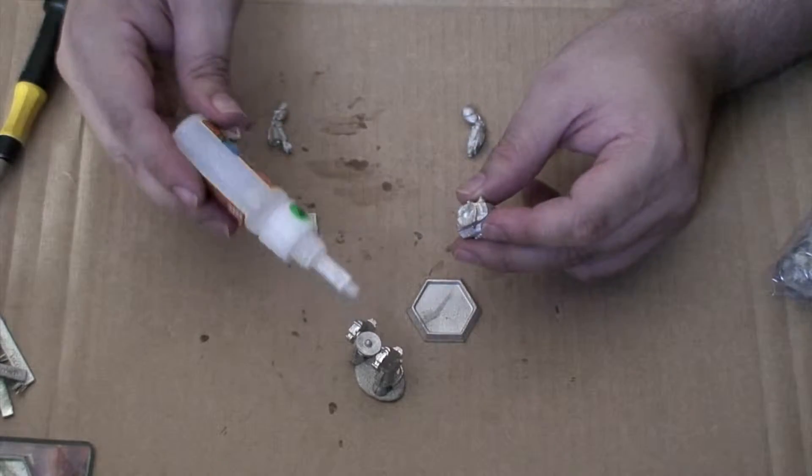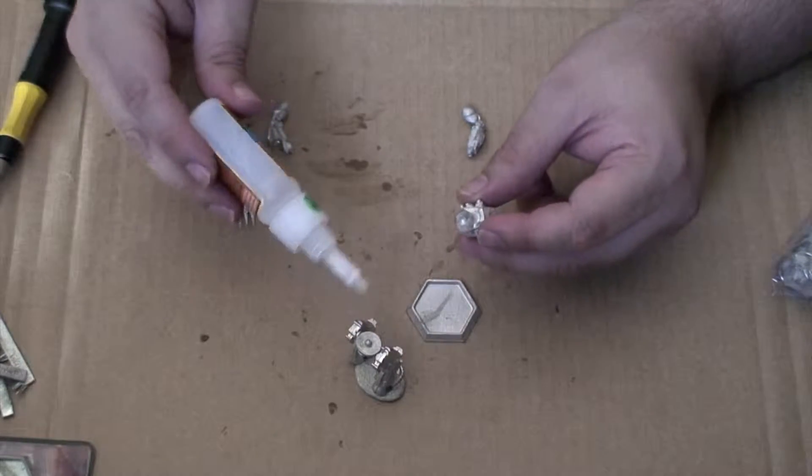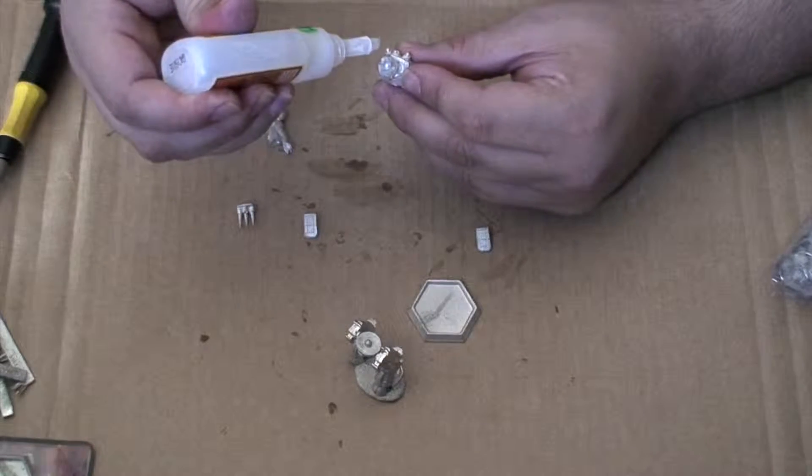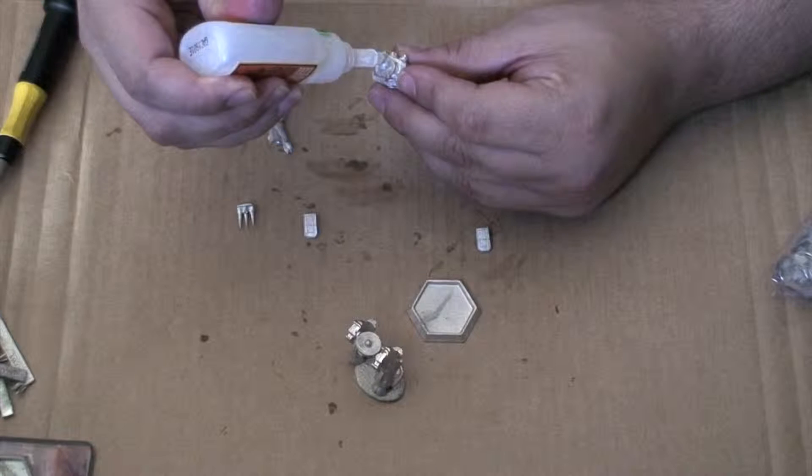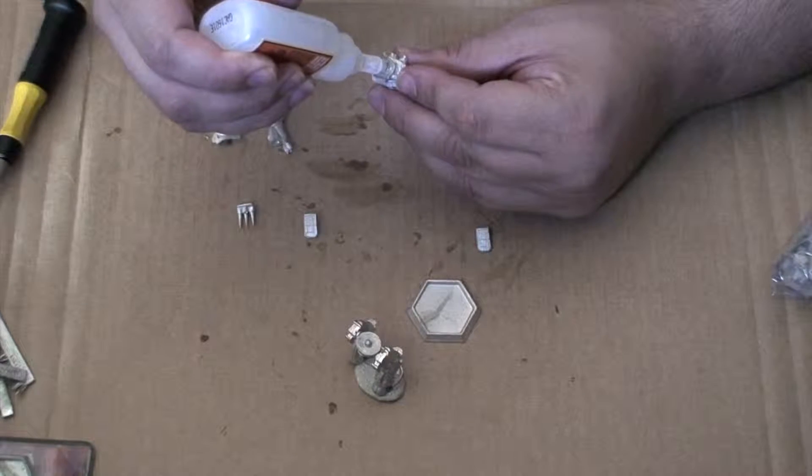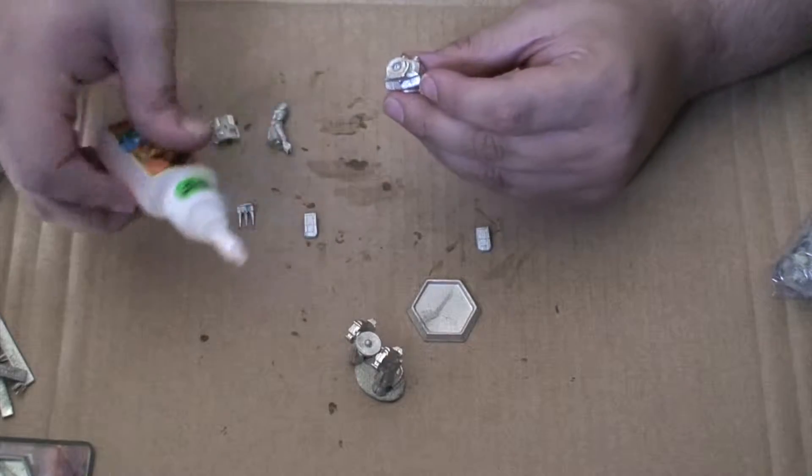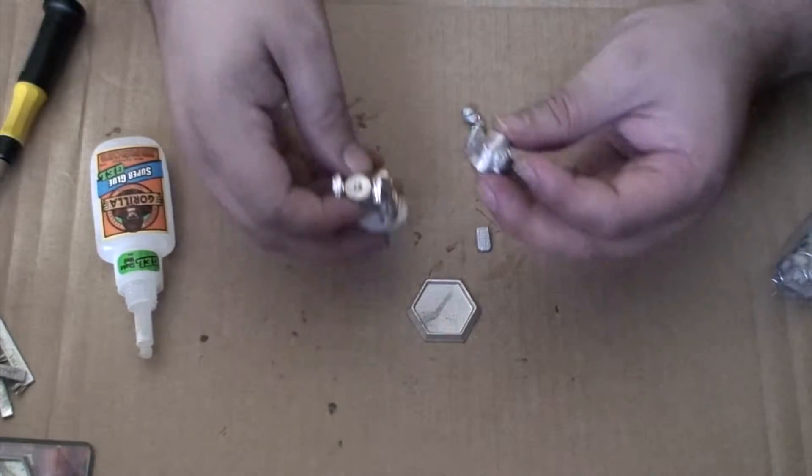You'll notice while this is a ball joint, both of these parts are actually flat. So the mech is actually going to sit flat on the base. A little bit on there, just for good measure.